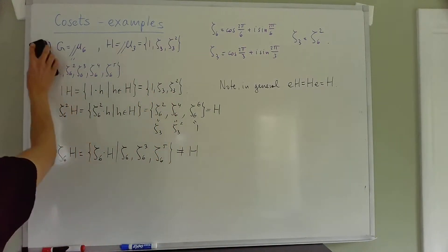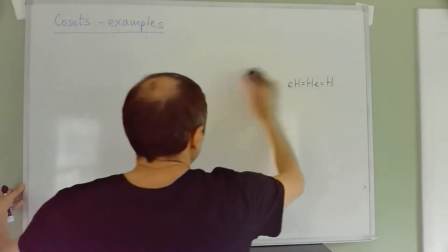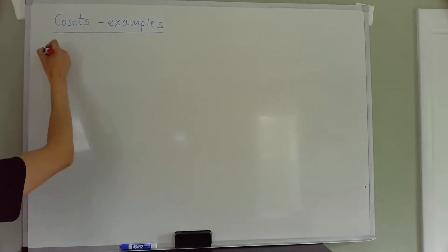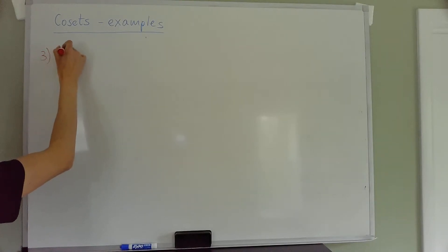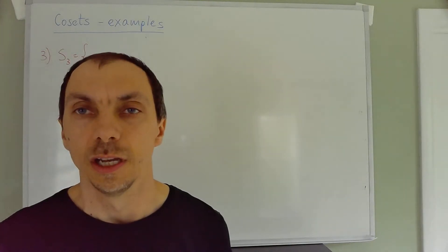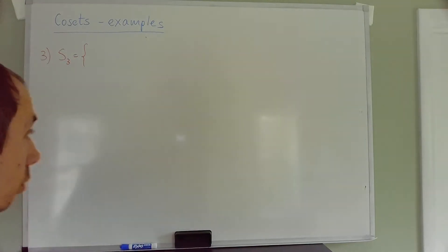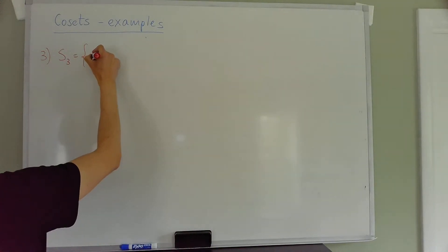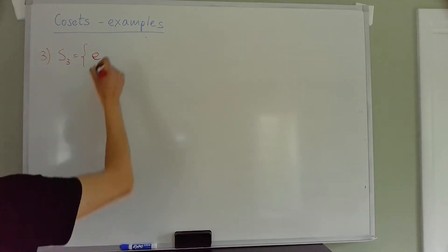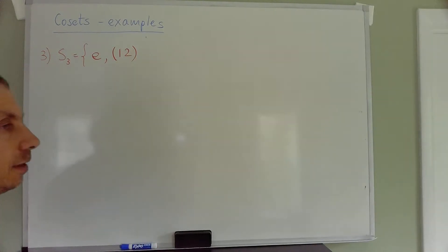Now let's look at examples of cosets in non-abelian groups. Let's take S₃, a simple non-abelian group — the symmetric group on three letters, consisting of all permutations of {1, 2, 3}. The elements are: e, the transpositions (1 2), (1 3), (2 3), and the 3-cycles (1 2 3) and (1 3 2). That's six elements total, which is 3 factorial.